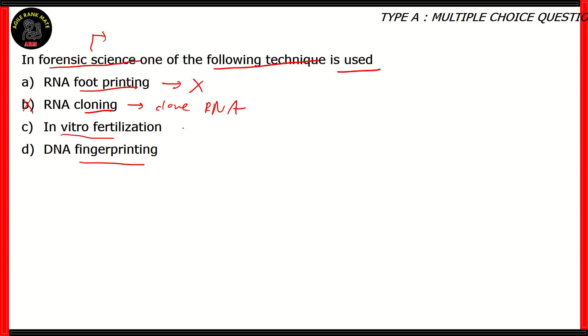Option C, in vitro fertilization. What is in vitro fertilization? It basically means the fertilization of the male and female gametes outside the human body. So what we call test tube babies or lab babies. Basically, the gametes are fused outside of the human body and then the zygote is inserted back into the human body. As you can see, it's mostly used for couples who can't conceive and not for forensic science.